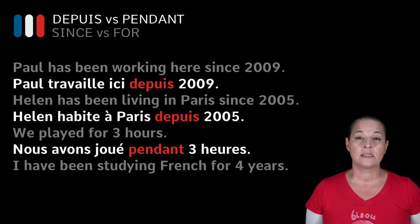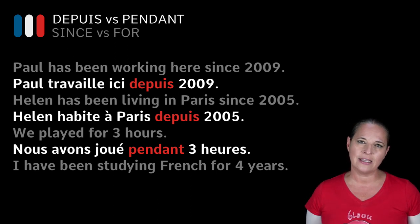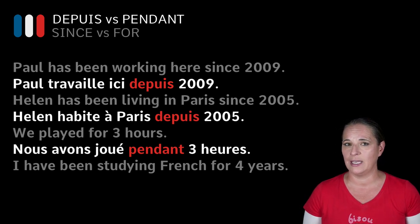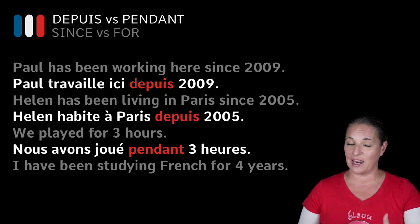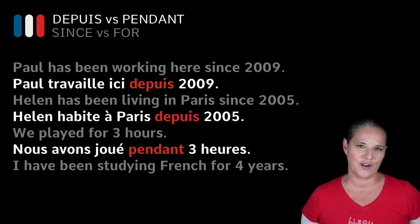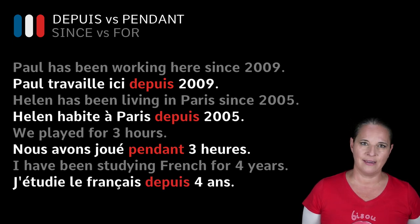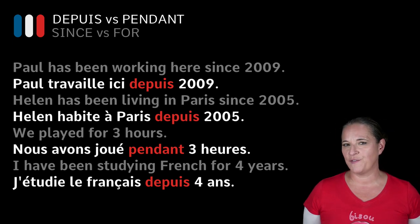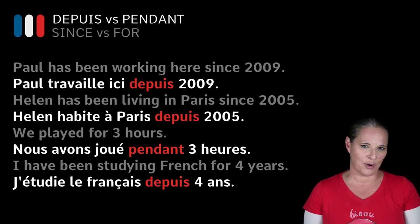'I have been studying French for three years.' Look at the tense, the sentence, and the timeline — it's starting in the past and still carrying on, meaning I'm still continuing to learn French. So: 'j'étudie le français depuis quatre ans.' This is the difference between 'since' and 'for' in French — or 'depuis' and 'pendant.'